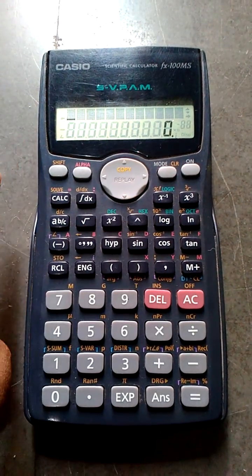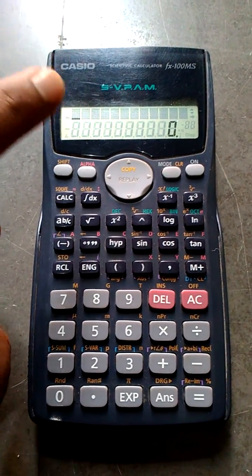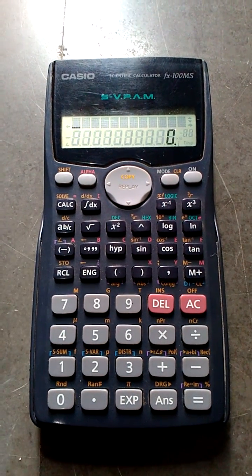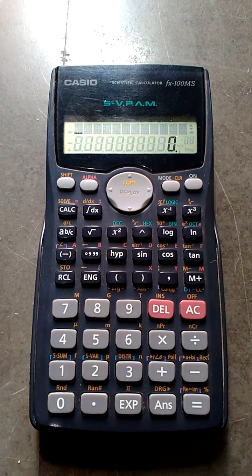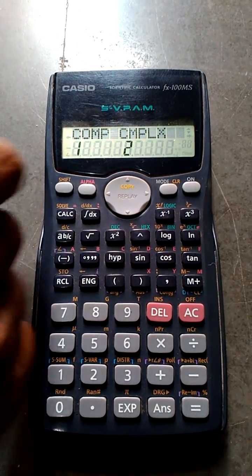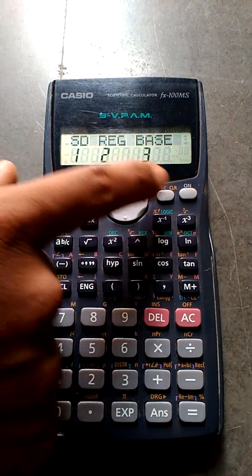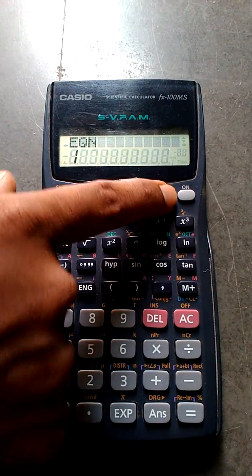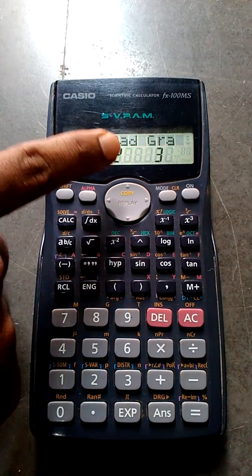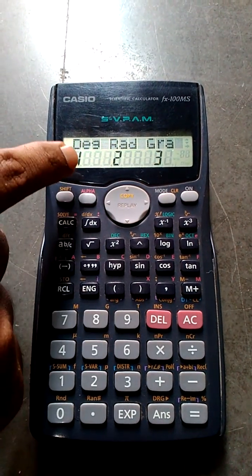So we are going to learn today how to convert from degree to radian using the Casio calculator. First of all, press the mode button four times so you'll get the options: degree, radian, and graph. That is one, two, three.